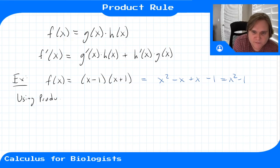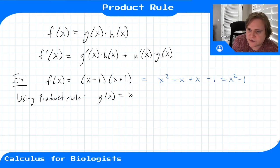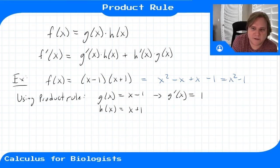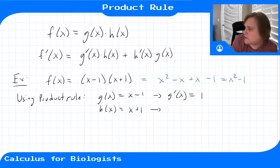Using the product rule, our g of x is x minus 1 and our h of x is x plus 1. So g prime — the derivative of this function — would be 1. That's just the slope of that line, or using the power rule: bring the 1 down, the exponent becomes 1, and the constant becomes 0. Similarly, h prime of x would also be 1 in this case.